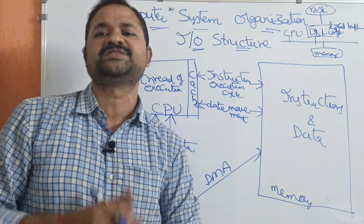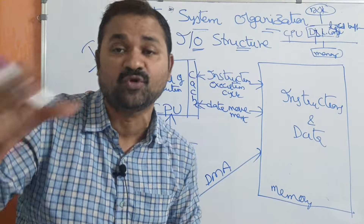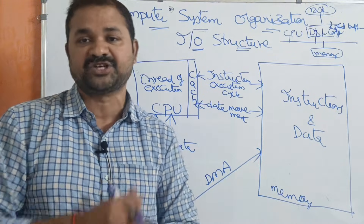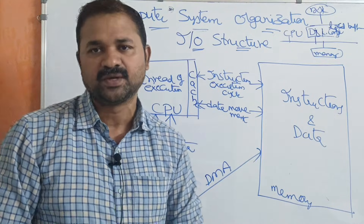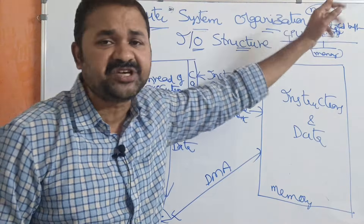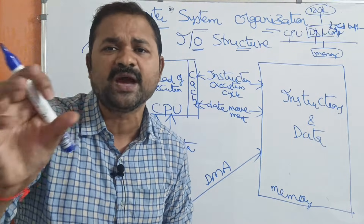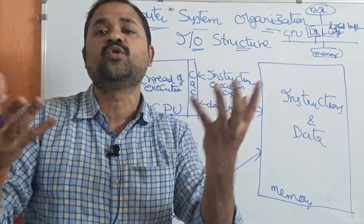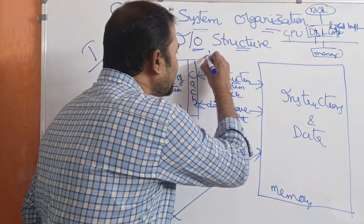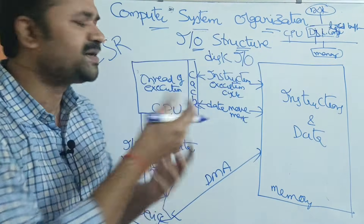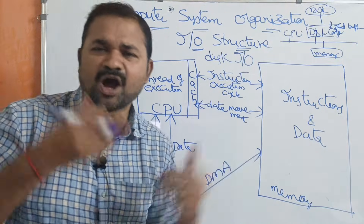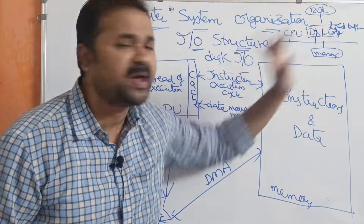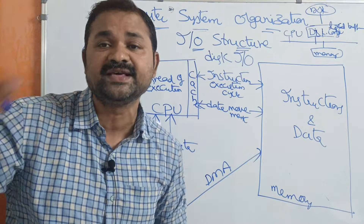The remaining instructions in that program will then be executed. This concept is called interrupt-initiated I/O, which was already discussed in the computer system operation video. The problem with interrupt-initiated I/O is: if you want to transfer a small amount of data, interrupt-initiated I/O is a suitable method. But if you want to transfer a large amount of data, like a large program from hard disk into memory, interrupt-initiated I/O is not suitable.